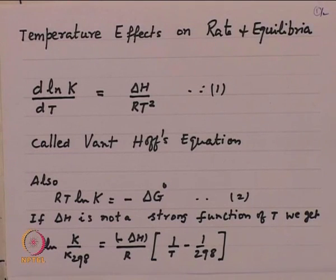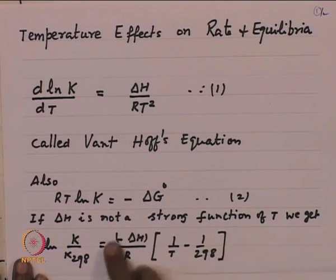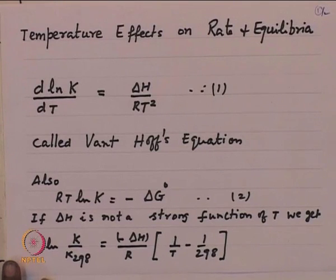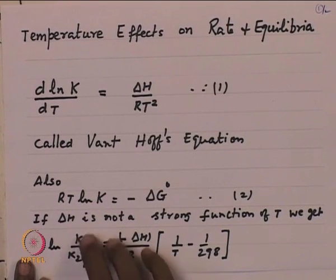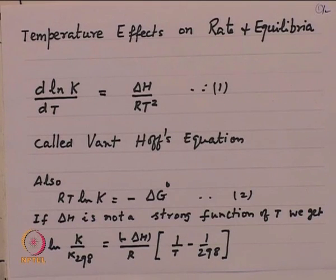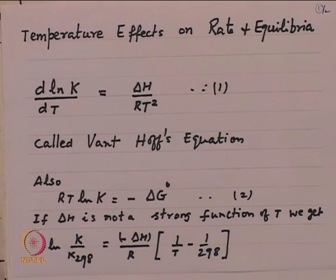If delta H is negative — which is an exothermic reaction — the opposite relationship holds. This becomes negative, so for the exothermic reaction, the right-hand side term is negative. Therefore, the value of K at temperature greater than 298 is less than the value of K at 298, showing that the equilibrium constant for an exothermic reaction keeps decreasing with temperature as you increase temperature. This is something we all know from basic thermodynamics.